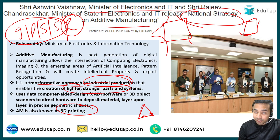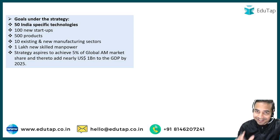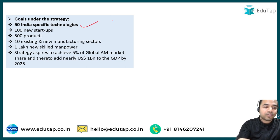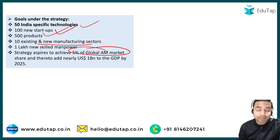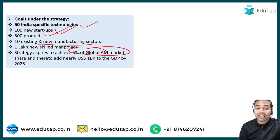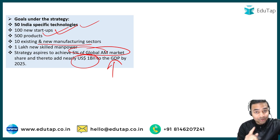Goals under the National Strategy on Additive Manufacturing include creation of 50 India-specific technologies, 100 new startups, 500 products, and coverage of 10 manufacturing sectors. It targets achieving 5% of the global additive manufacturing market and adding nearly 1 billion US dollars to India's GDP by 2025, giving a huge boost to the economy.